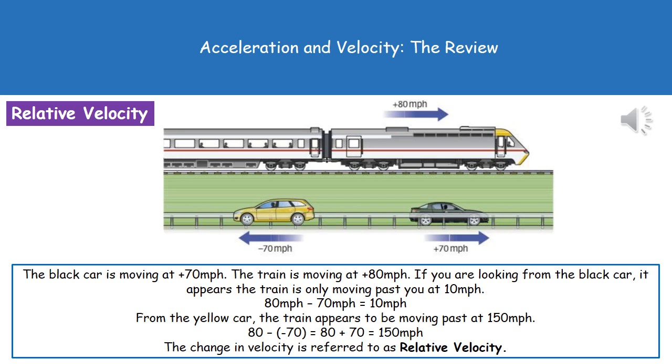In the picture at the top there, we've got a train and two cars. Our train is traveling at plus 80 miles per hour, so it's got a velocity of plus 80. The black car is traveling in the same direction as the train with a velocity of plus 70 miles per hour. The yellow car, which is traveling in the opposite direction, has a velocity of minus 70 miles per hour. If you imagine you're sitting in that black car looking out at the train, it's going to look like it's only moving past you at 10 miles per hour.